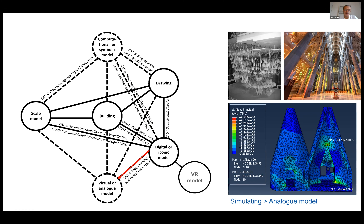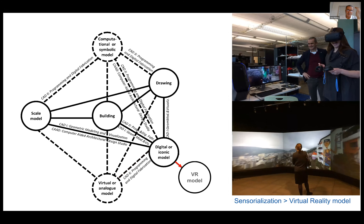Now we have digital tools that can simulate the behavior of buildings and communities from different viewpoints — structural, environmental, and so on. Once we have the generative system able to produce different candidate solutions, we can use simulation and analysis tools to find the solutions with the right qualities. This is called performance-driven design. From the digital model we can also create a virtual reality model, which provides the user with a sense of being immersed in an environment — used both for site visiting and conveying design solutions to the user.